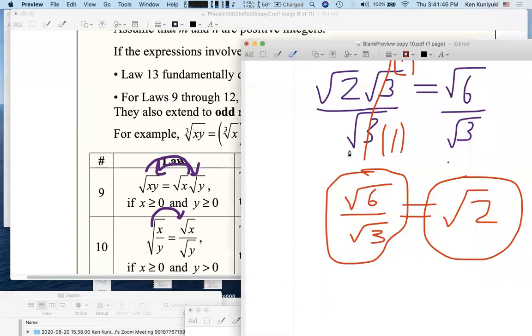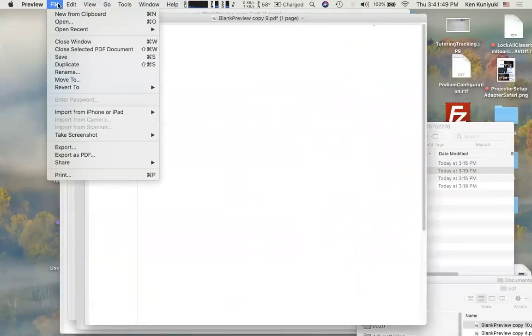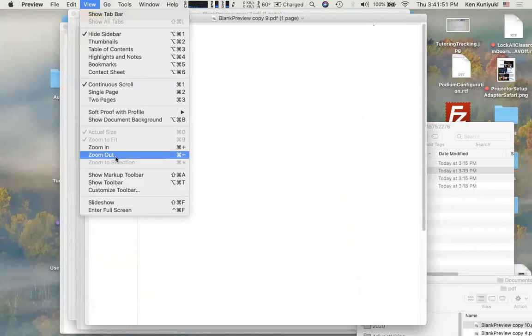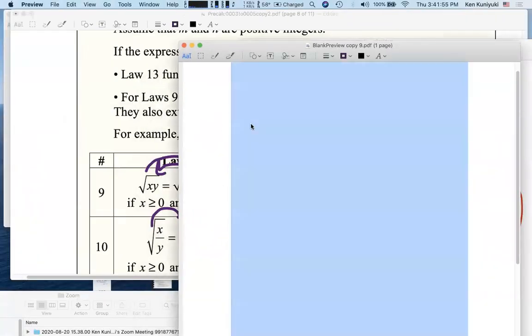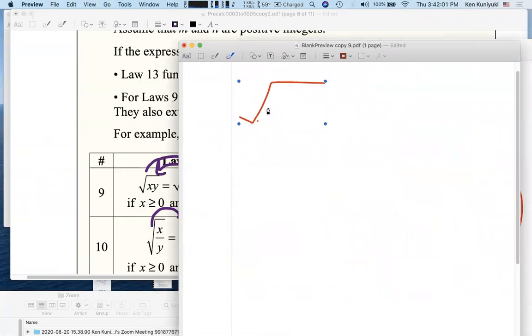However, this does not apply to the radical of a sum or a difference. So in general, the square root of x plus y is not, in general, equivalent to the square root of x plus the square root of y. The radical does not break up over sums or differences in general.